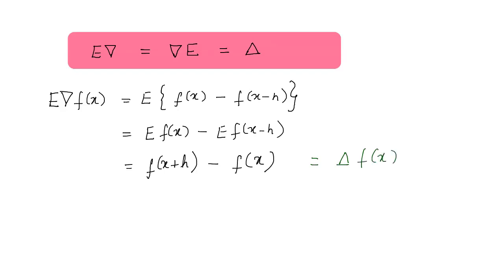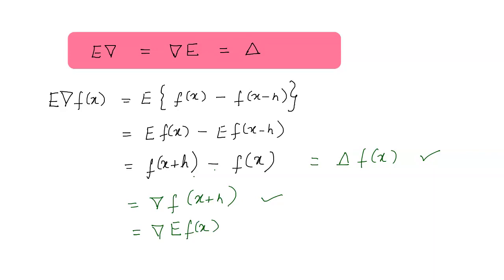This expression is also equal to nabla f(x + h). Since nabla f(x + h) = f(x + h) - f(x), and f(x + h) can be written as E f(x), we have nabla E f(x). This proves our result that E nabla equals nabla E, which is equal to the forward difference operator delta. The key is to be clear about which expression belongs to which operator and proceed step by step.